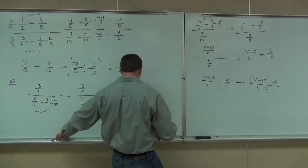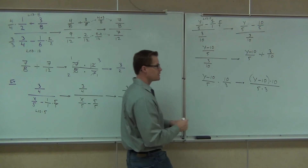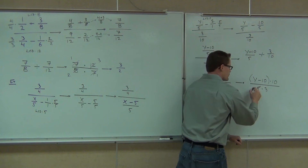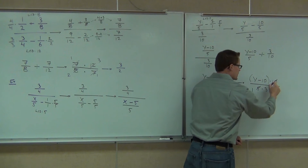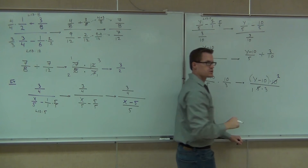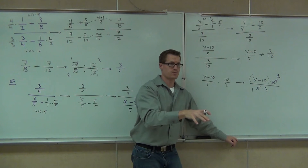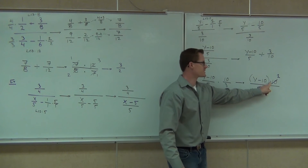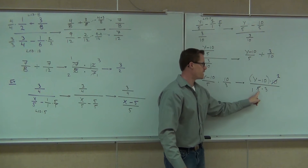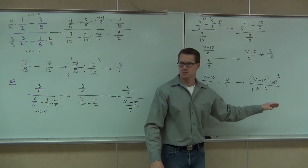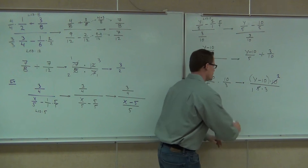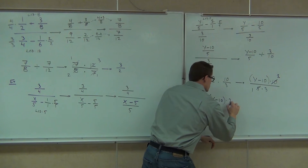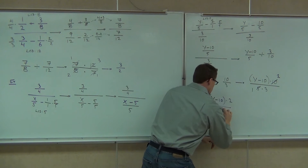So here we'll simplify: 5 goes into both 5 and 10. Because those are being multiplied by this entire expression, and 5 is going to be multiplied by 3, that's allowing me to simplify it. So I'm going to get y minus 10 times 2 over 3.